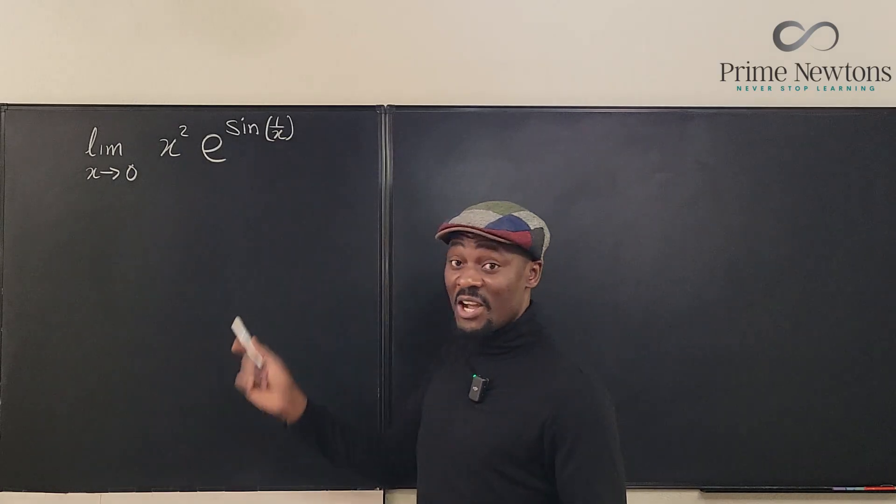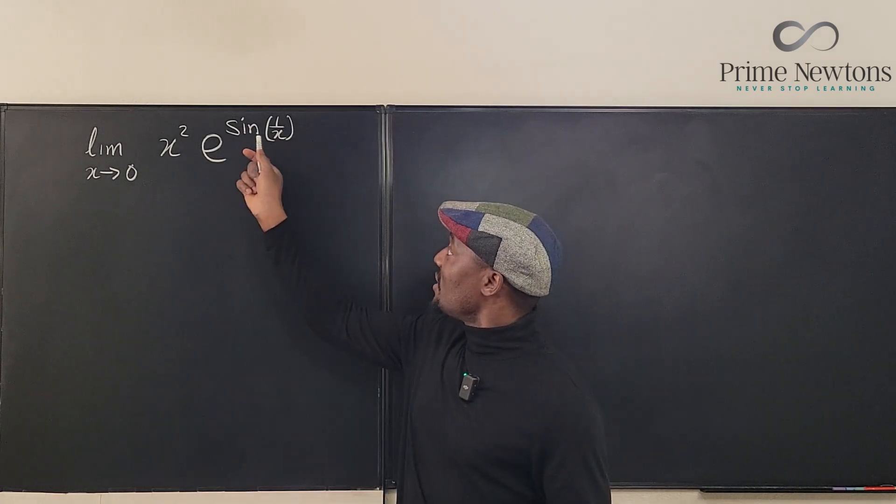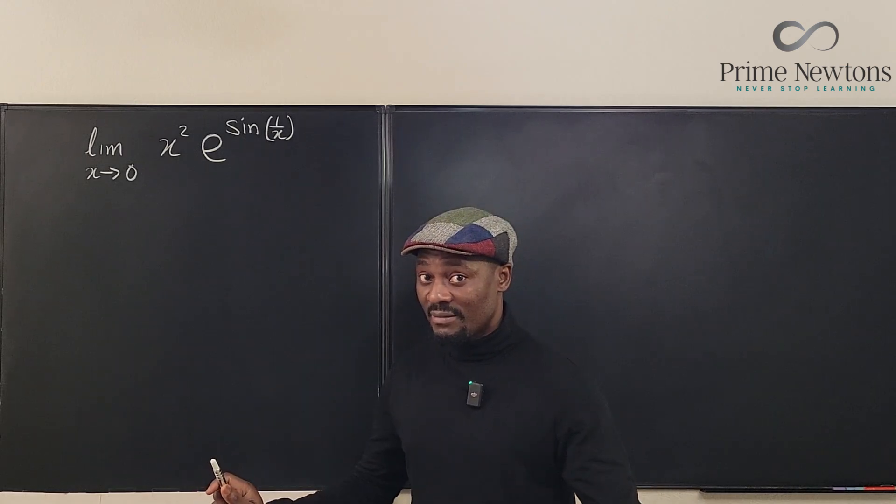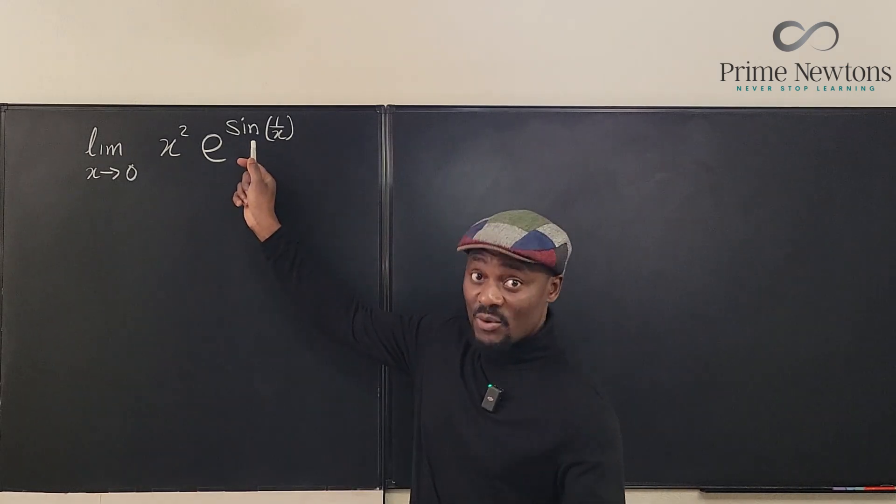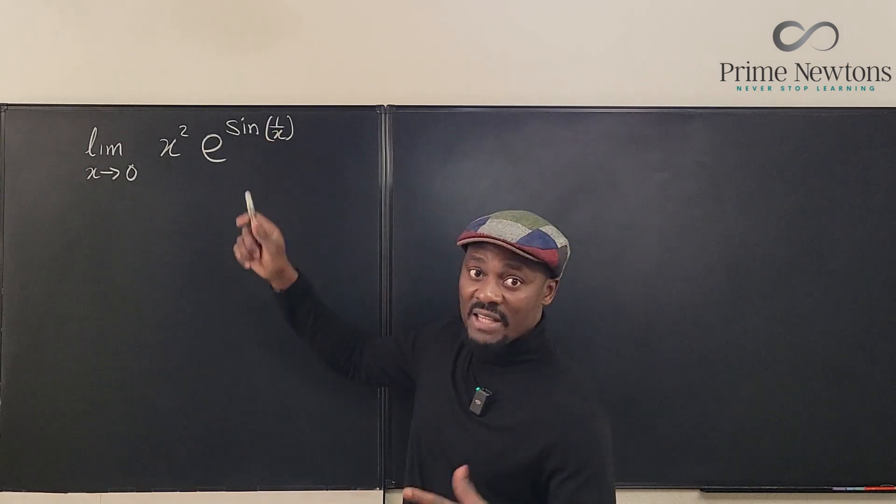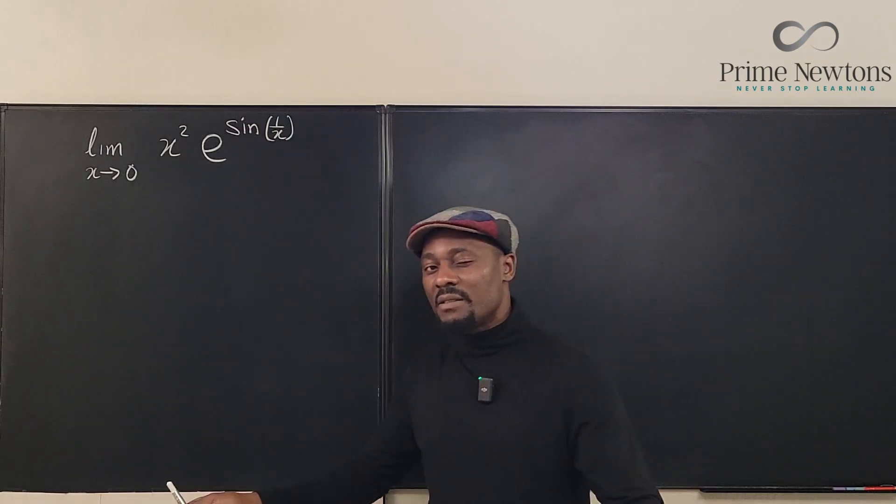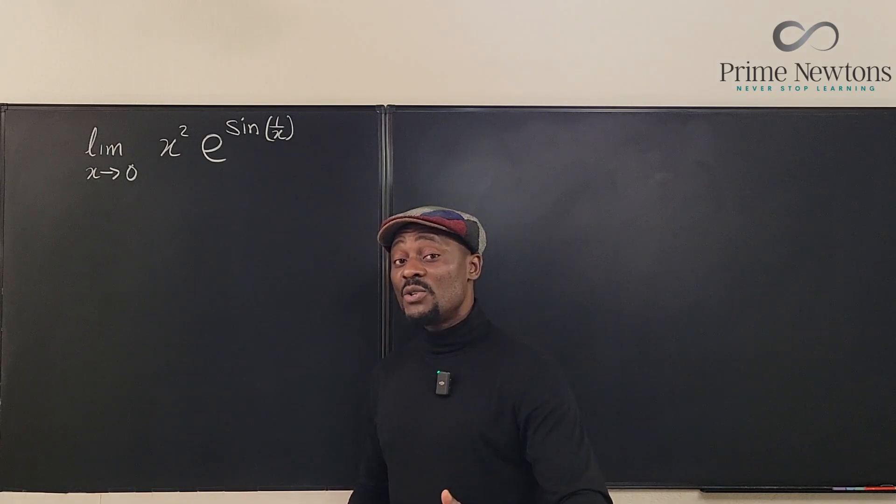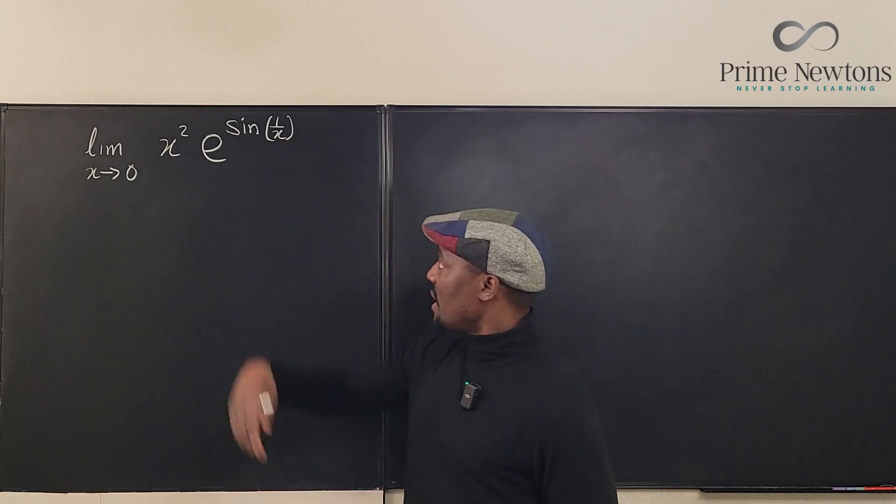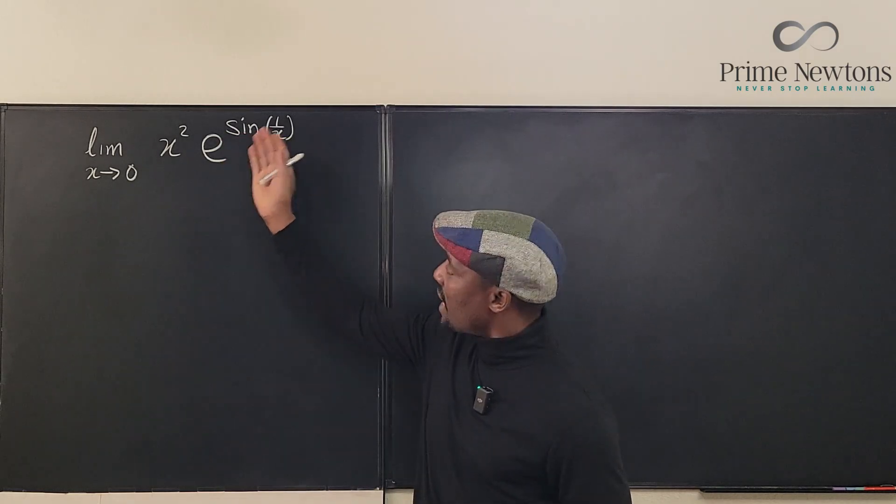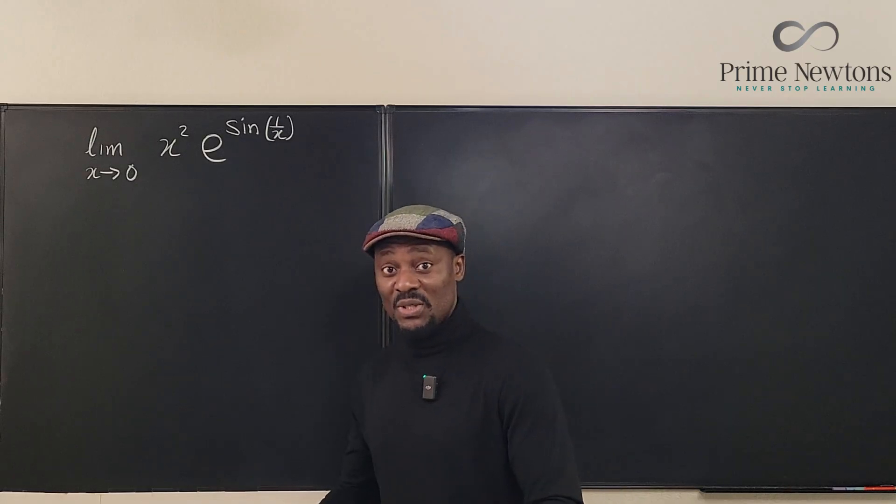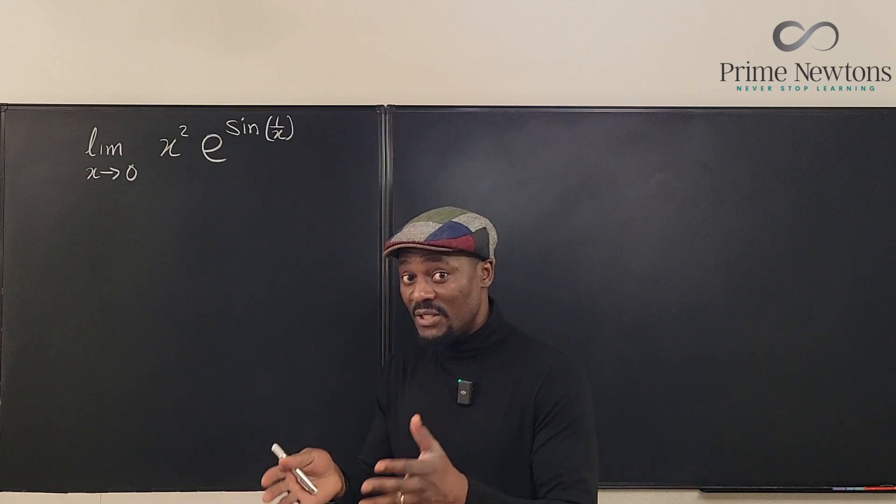So, because it's in the denominator, sine is not defined at x equals zero. In this case, sine of one over x is not defined, and because of that, we can't do anything. And if you try to use L'Hopital's rule, every time you take the derivative, this guy is always going to be there. There's no way to get rid of it. So L'Hopital's rule doesn't help you in this case. What can we do?